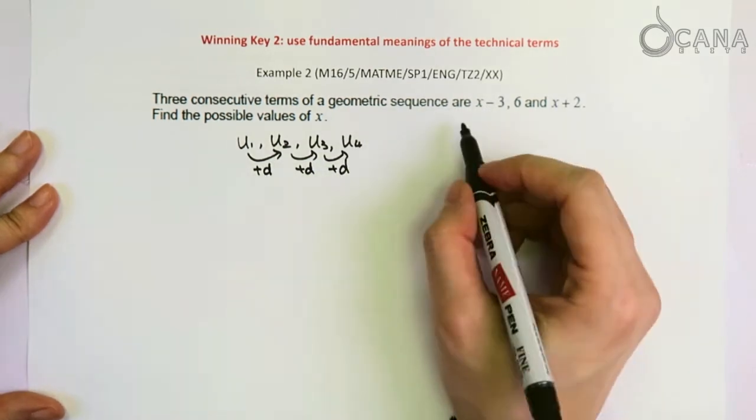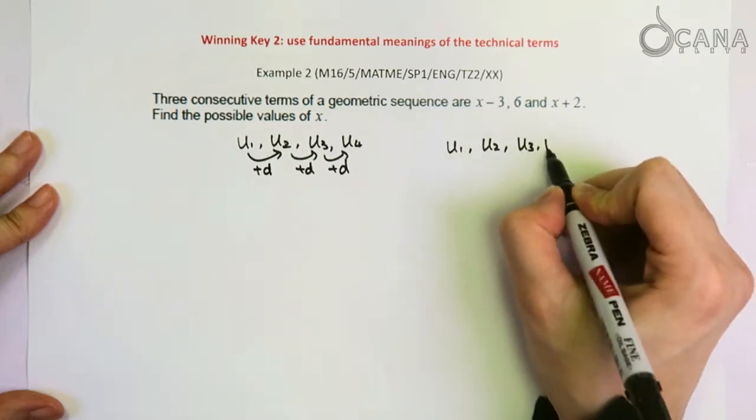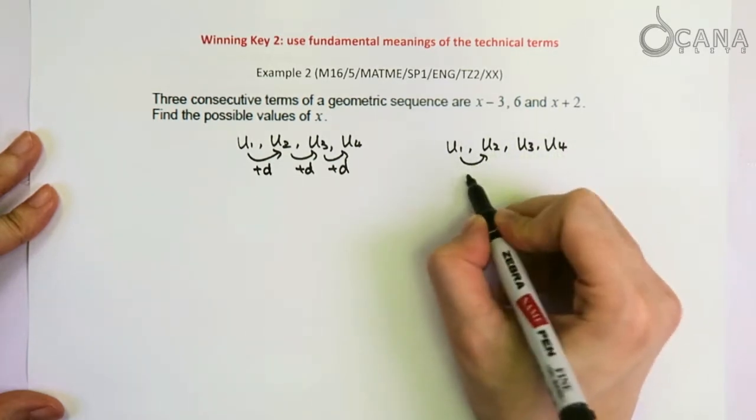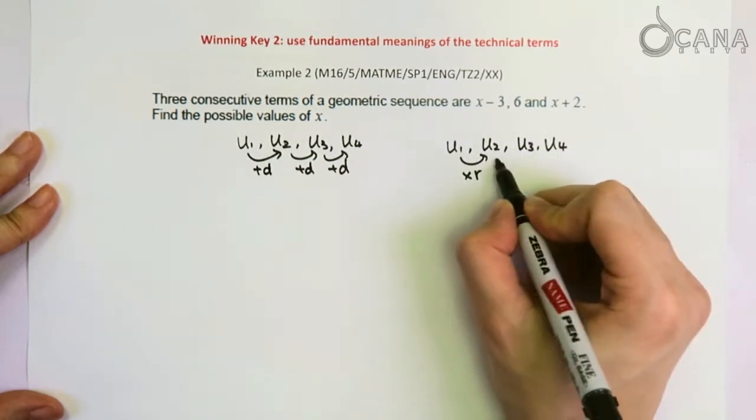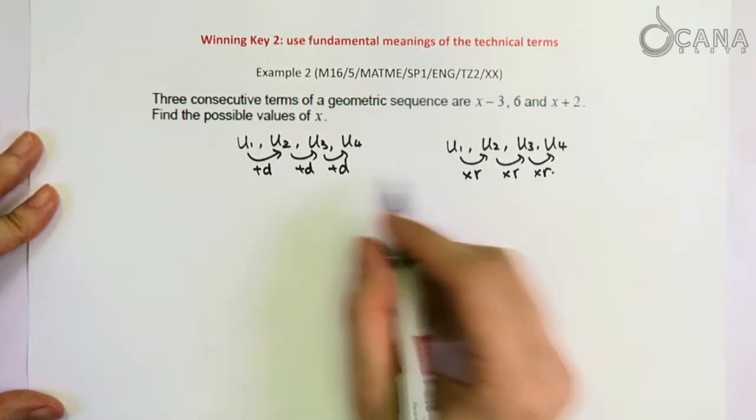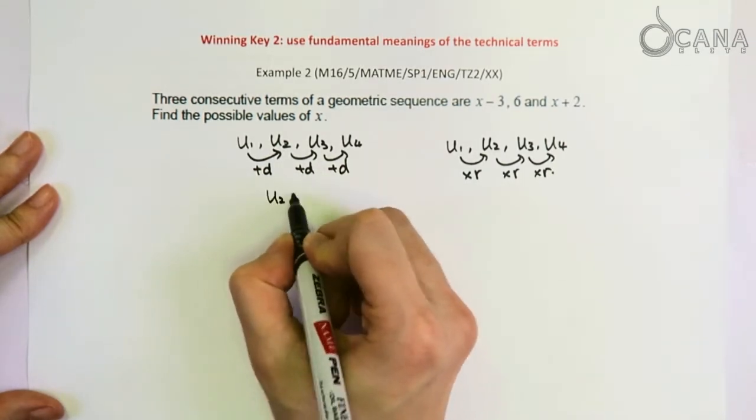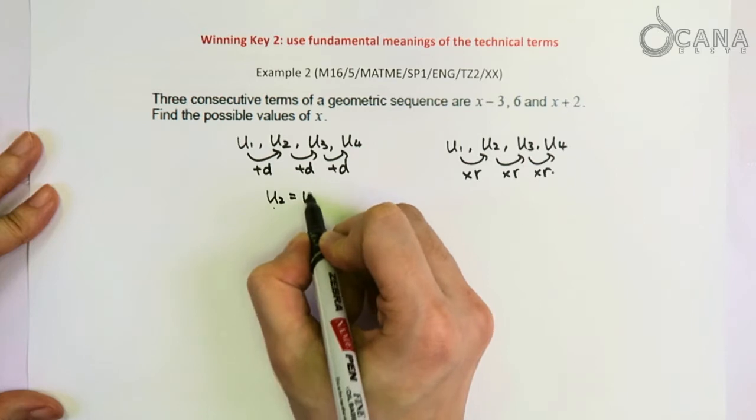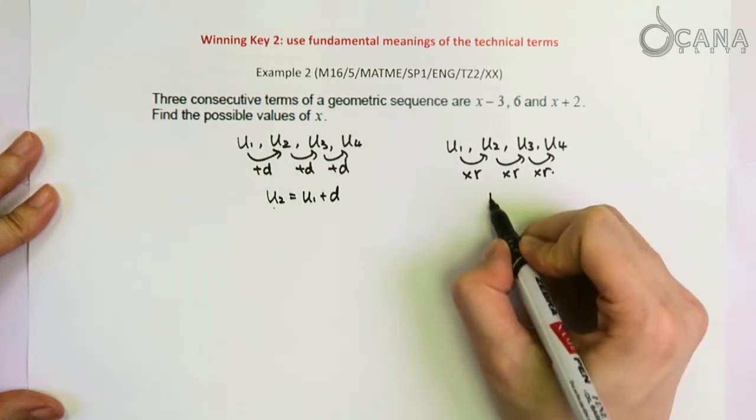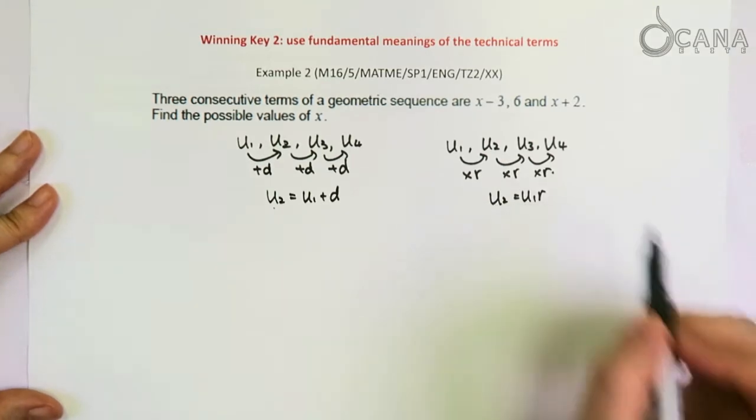And in a geometric sequence, you get the next term by multiplying the previous term with a common ratio. So in both cases, we'll have an expression that looks like this. We have to know that U2 is just U1 plus D, and here U2 is U1 times R.